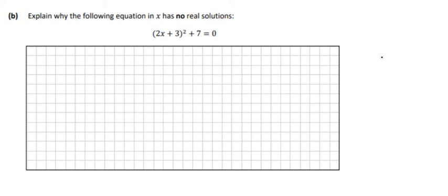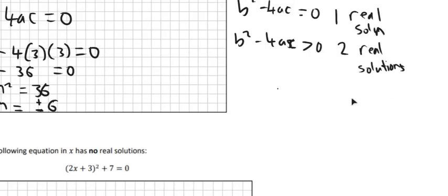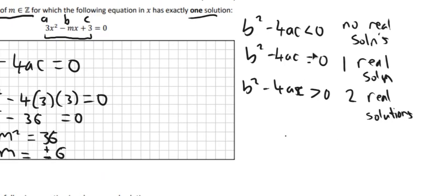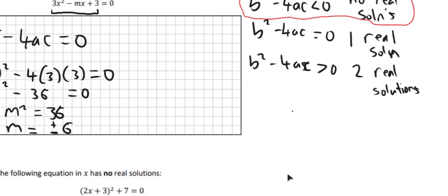Part B of the question then, explain why the following has no real solution. So similarly again, if you go back up to the little rules up here at the start. So no real solutions. They're asking us about the first one here then. If it has no real solutions, then B squared minus 4ac, it has to be less than zero. So if we show that, then we're okay.